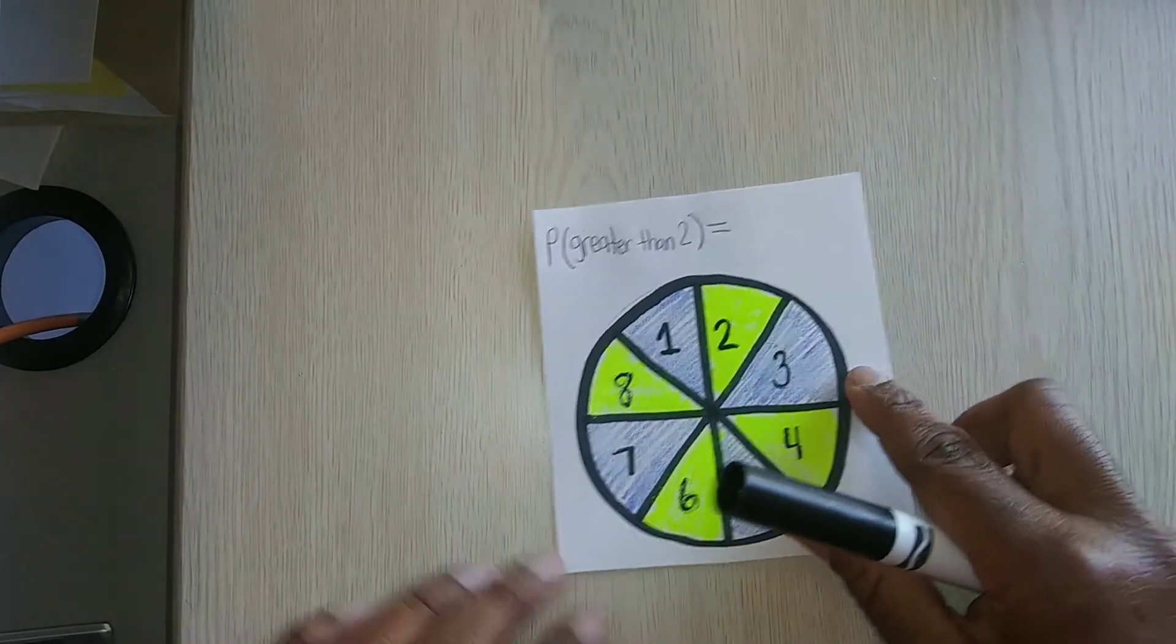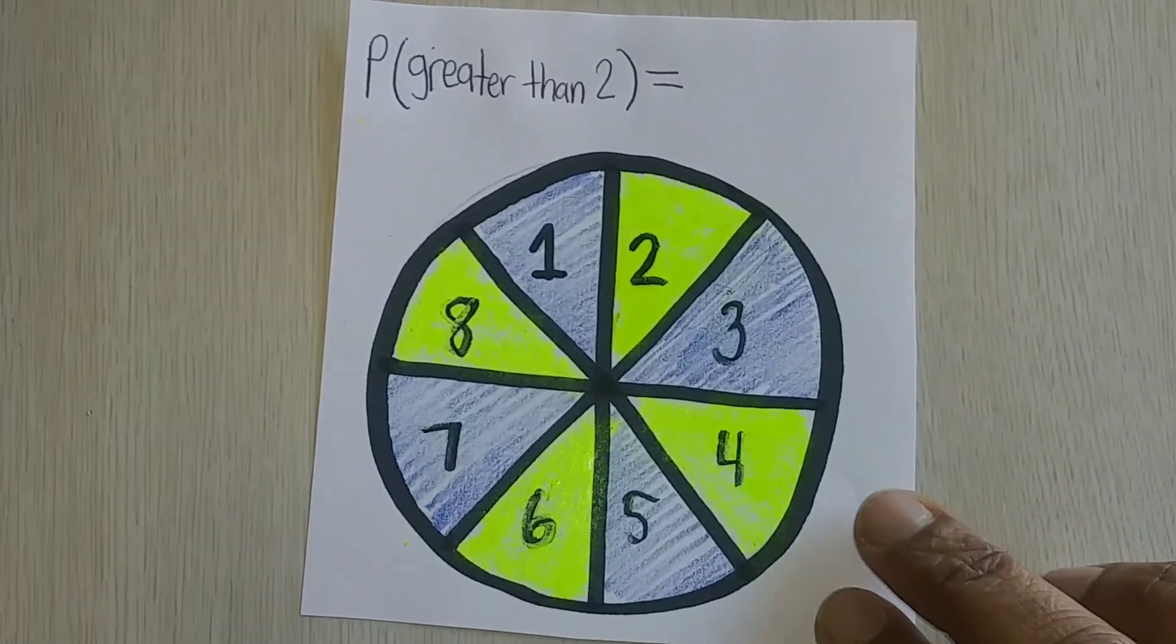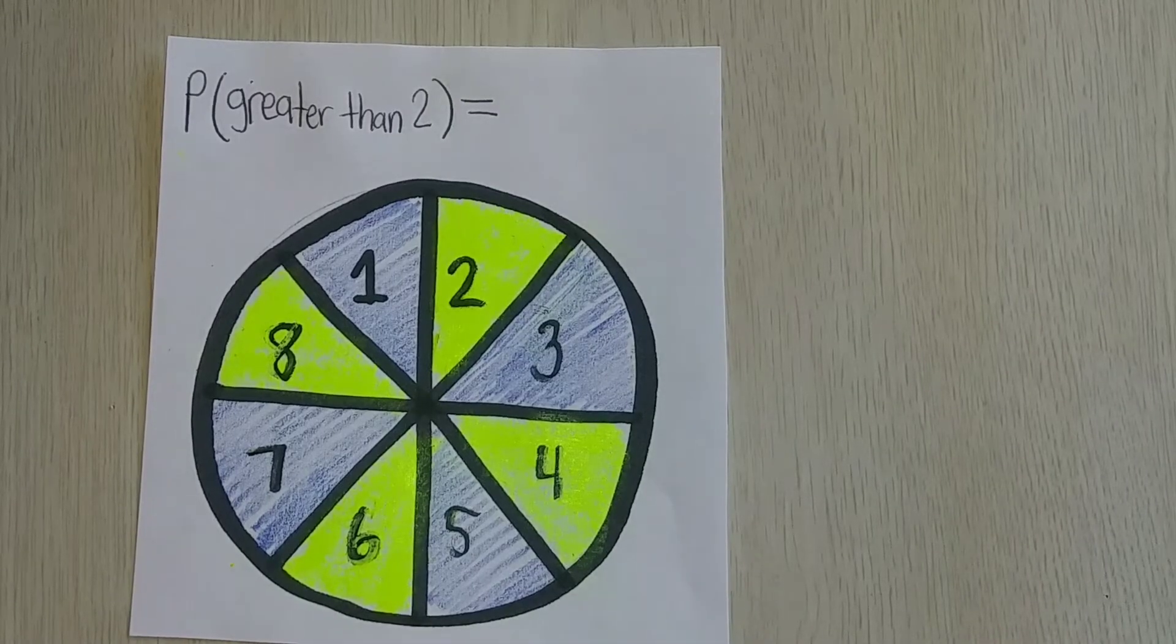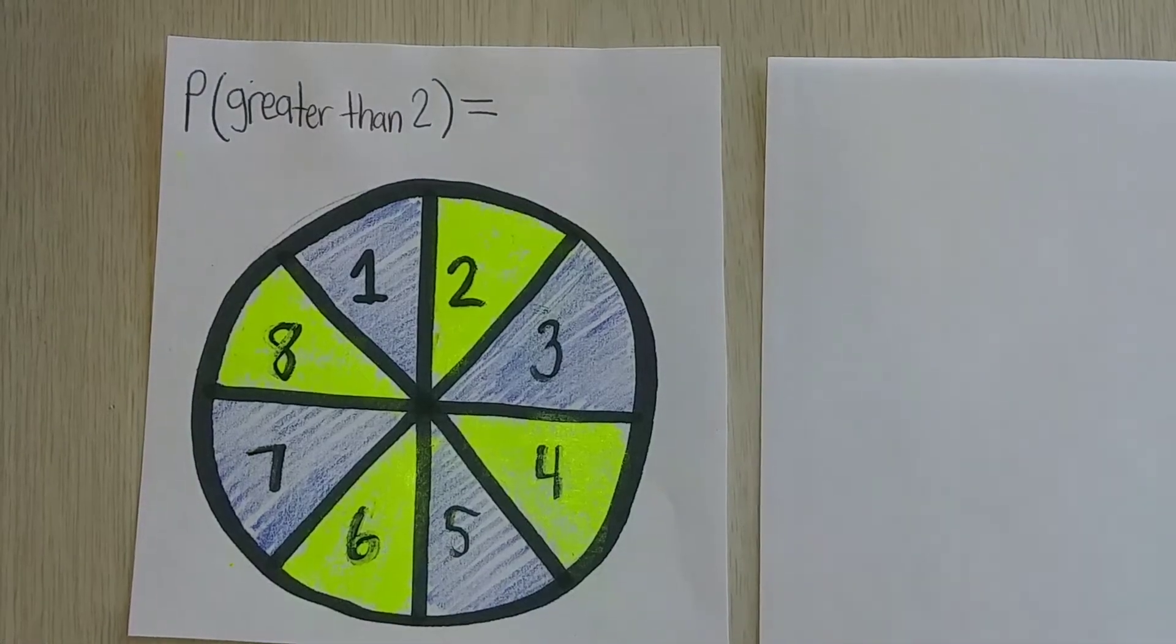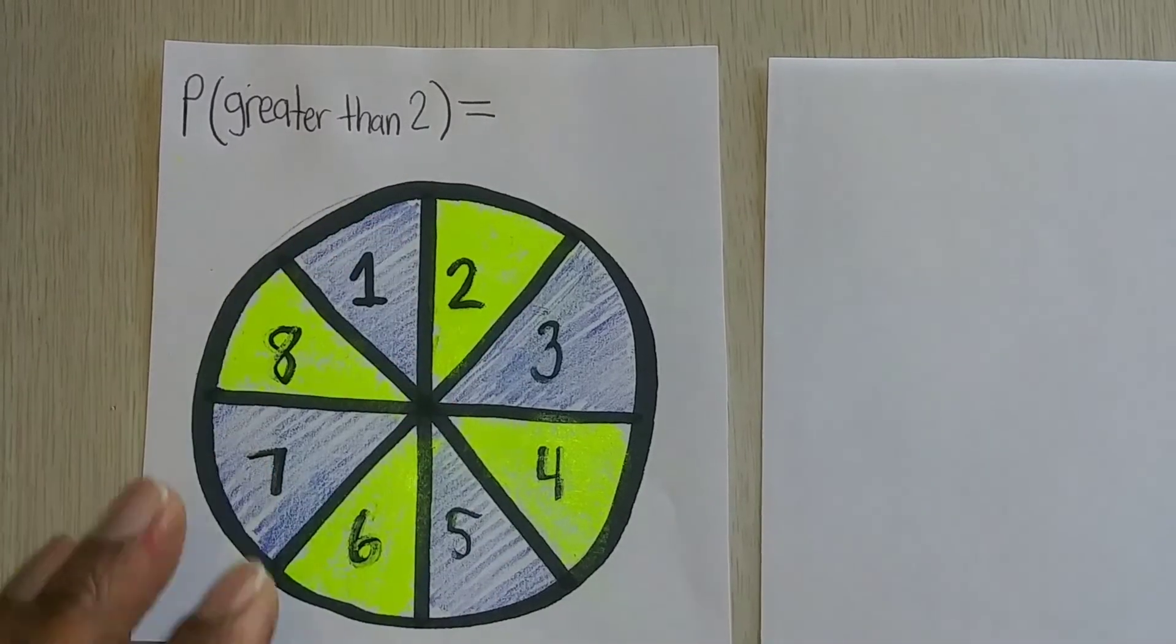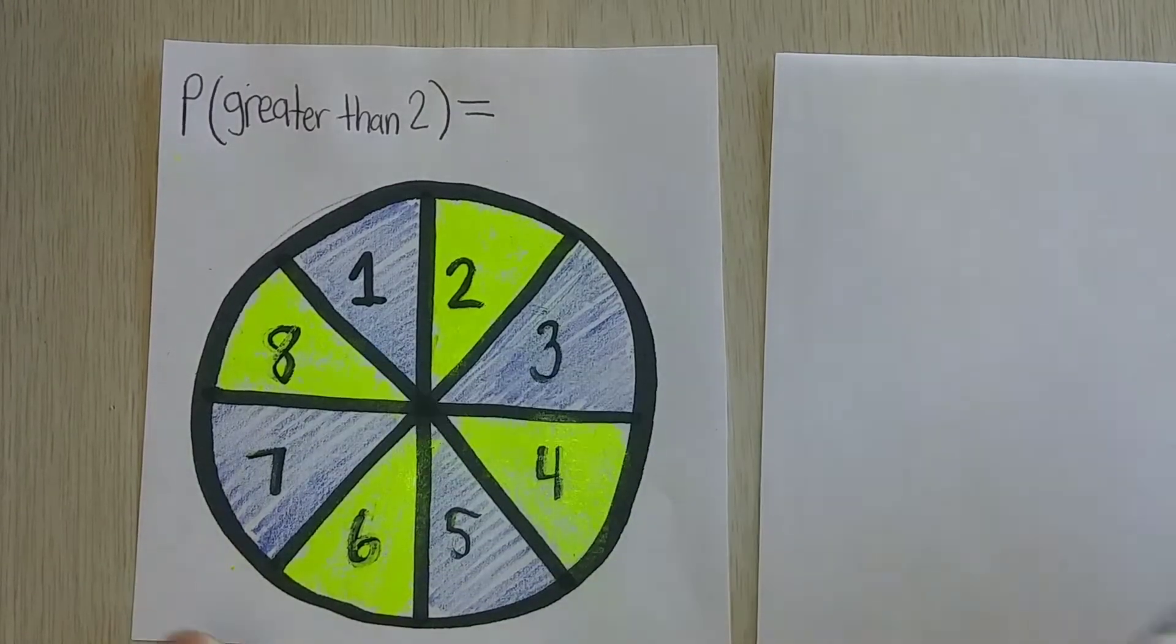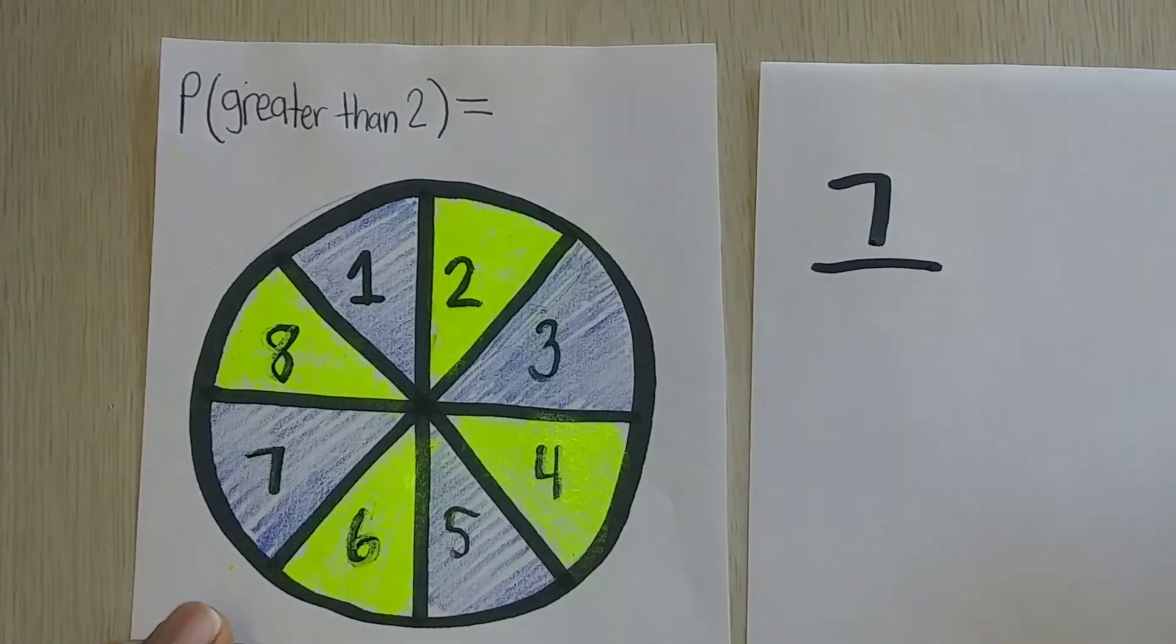Now, take a look at this. With this spinner right here, let's talk about the probability of this spinner landing on a number that's greater than two. So theoretically, according to math, how many sections are there labeled that's greater than two? Well, there's one, two, three, four, five, six, seven. There are seven possible outcomes that's greater than two.